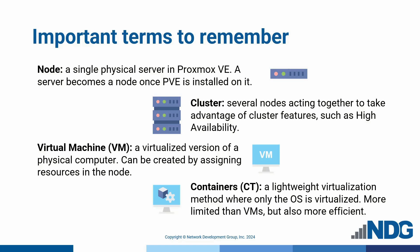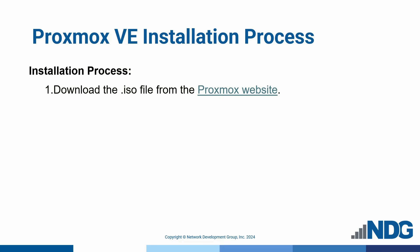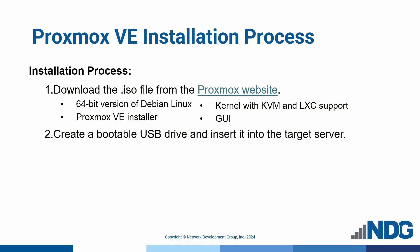Understanding these terms will help you navigate Proxmox VE and make the best decisions for your virtualization needs. Let's go over the installation process for Proxmox VE. First, download the Proxmox VE ISO image file. This file contains a 64-bit version of Debian Linux, the Proxmox VE installer, and all necessary components like a kernel with KVM and LXC support, as well as the graphical interface. Second, create a bootable USB drive with this image file. Be careful when choosing the target drive to avoid overwriting any other drive by mistake.